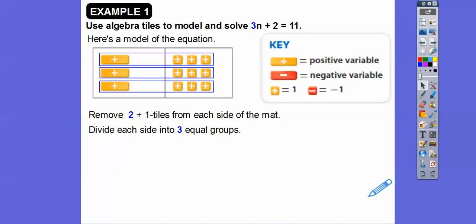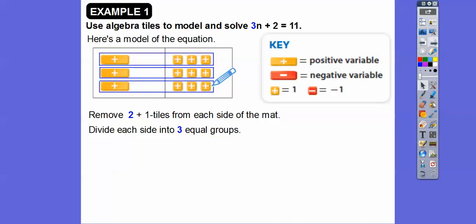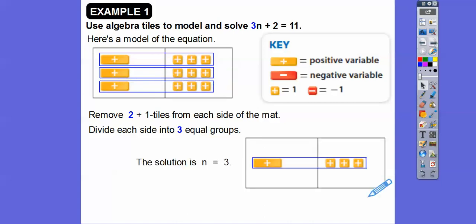This tells me right here that 1n equals 3, or this n equals 3 — so that's our answer right there. The solution is n equals 3.